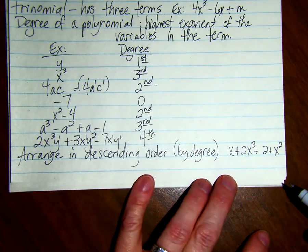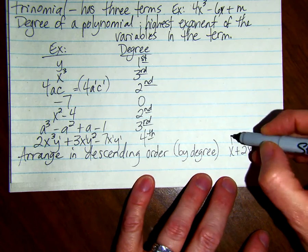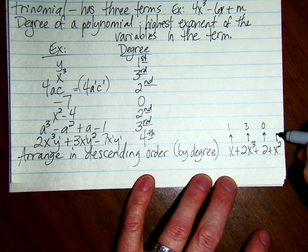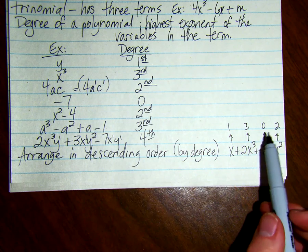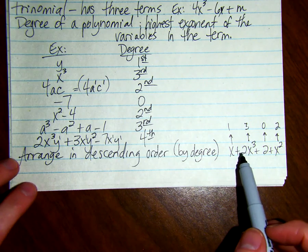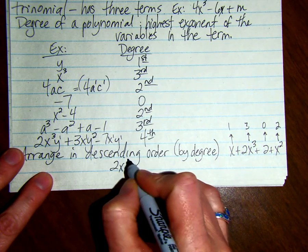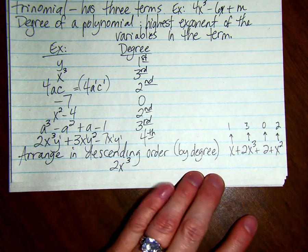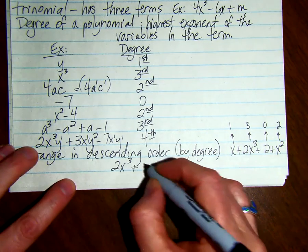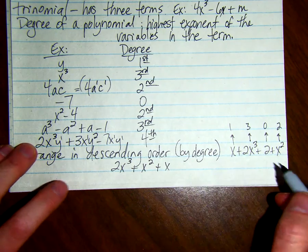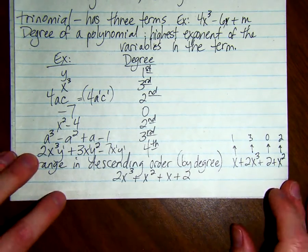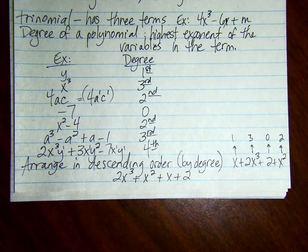We have x plus 2x cubed plus 2 plus x squared. If we just look at the degrees: this one has a degree of 1, this one is a degree of 3, that's 0, and this one's 2. When we do descending order, we're going to do the biggest term first. So this is 2x cubed, then the second degree is x squared, plus x squared. The first degree is x, and the 0 degree is 2. And that's the end of the lesson.